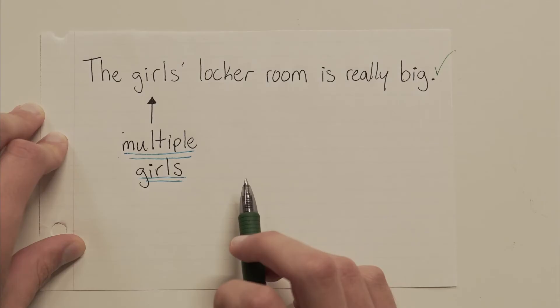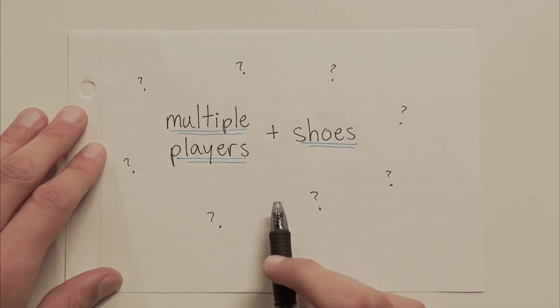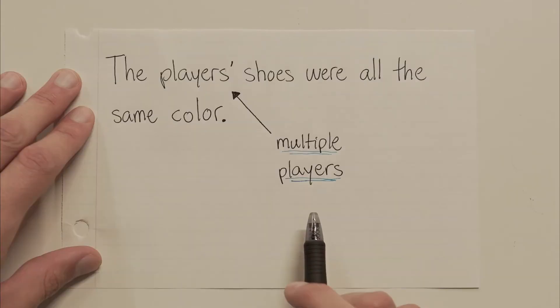One more. What if we had several players and all of their shoes were the same color? We'd start with players, which is the regular plural form of that word, and we'd just add an apostrophe to the end. So something like, the players' shoes were all the same color.